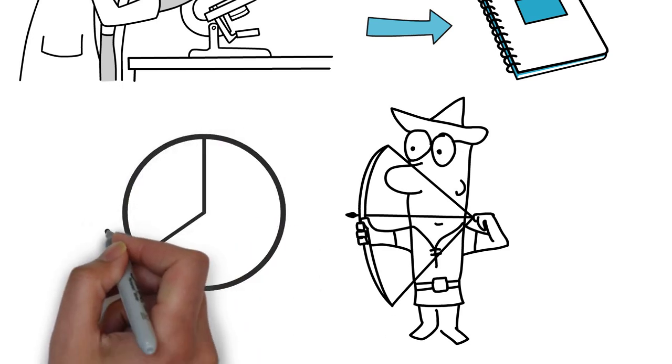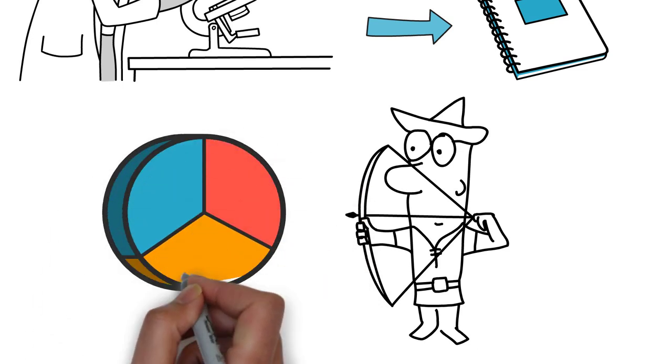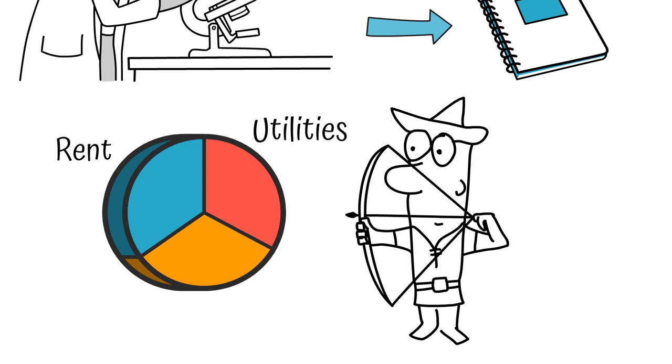It's a good idea to allocate money for necessary expenses such as rent, utilities, and groceries first, and then divide the remainder of your budget among your other expenses and savings.